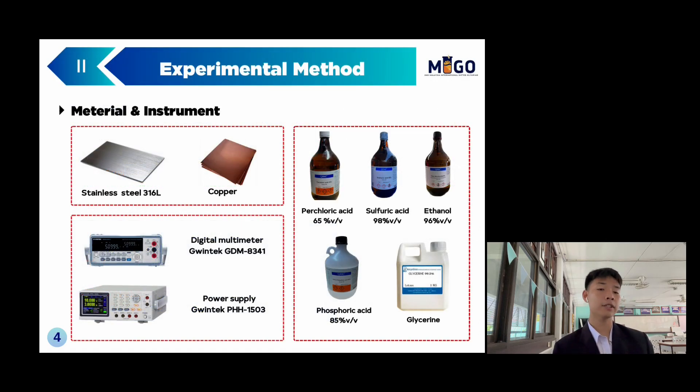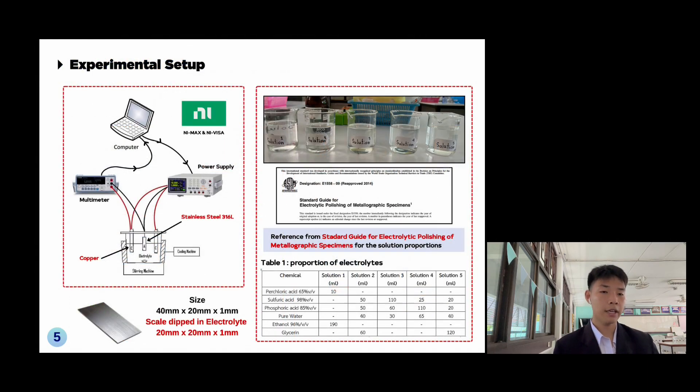This is the experimental method. We write Python code to control the power supply to increase voltage. We let stainless steel be the anode and copper be the cathode. The multimeter receives the electric current value and sends it to the computer to create a current density and voltage curve. The solution proportion is referenced from the standard guide for electropolishing of metallographic specimens.